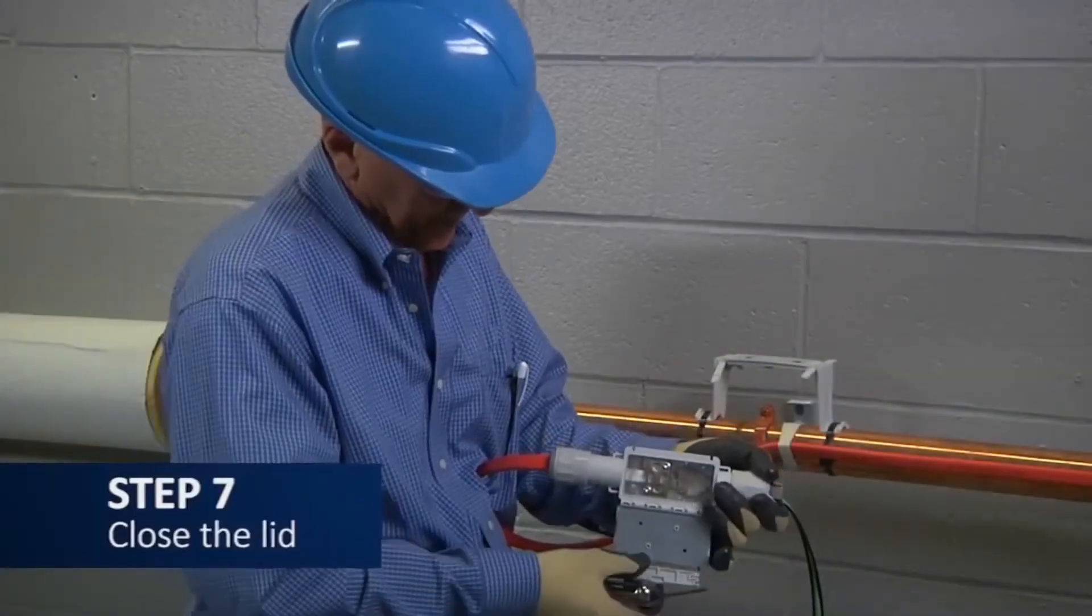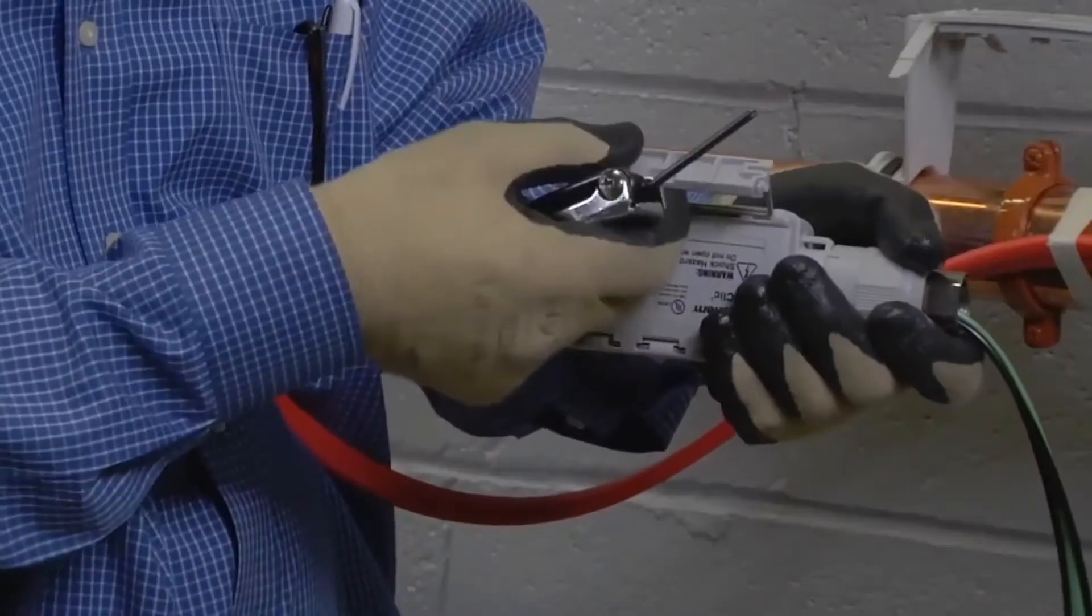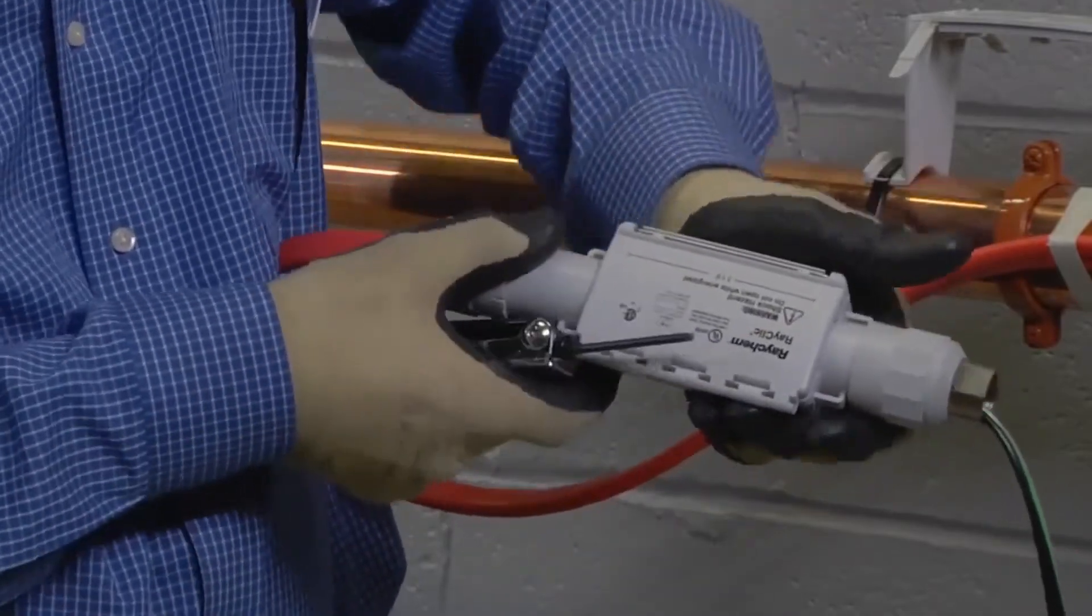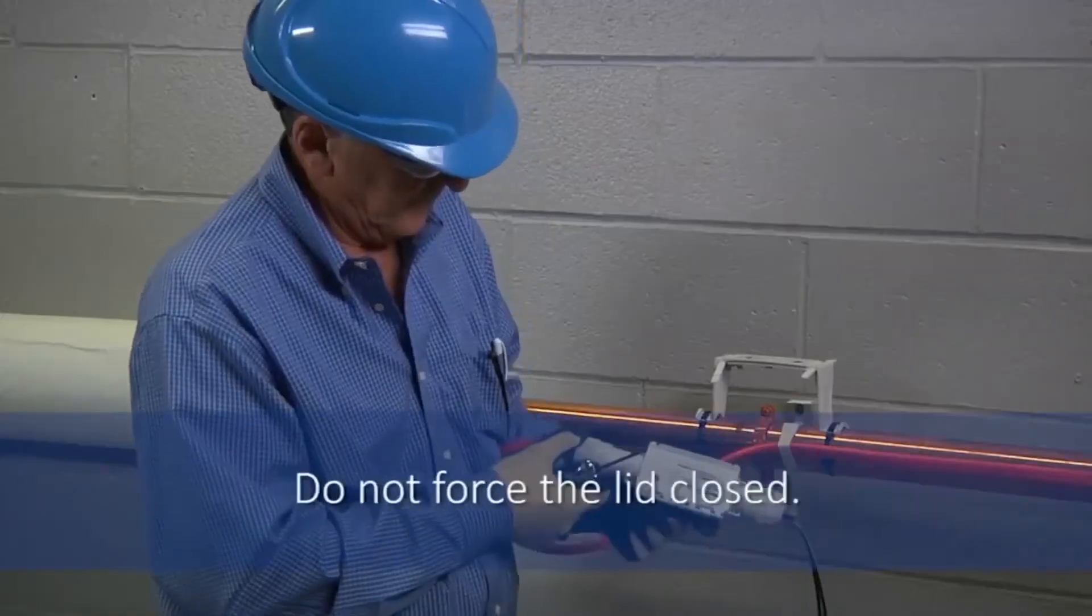Finally, close the lid and snap the lever shut. If the lid does not close easily, check the connection to ensure that all screws are fully tightened. Do not force the lid closed.